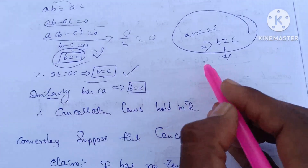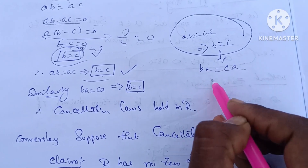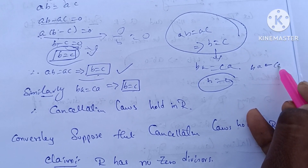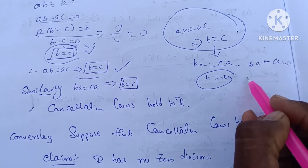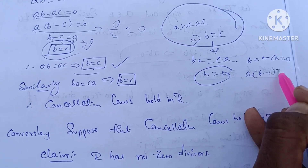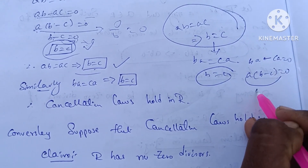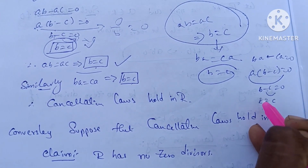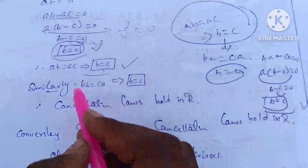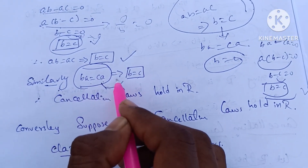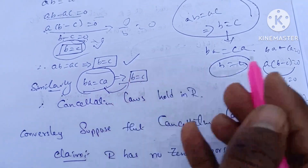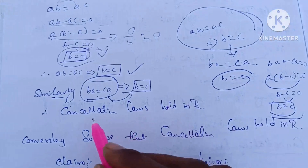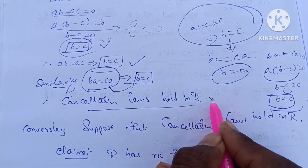Similarly, BA equals CA. Now BA equals CA, then BA minus CA equals zero, so (B minus C)A equals zero. So B minus C equals zero, which means B equals C. We write directly: B equals C. Thus cancellation laws hold. Therefore, cancellation laws hold in R. Here we have step 1.